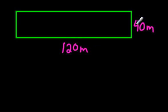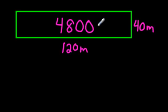So what's 120 times 40? 4,800. I just did it on my calculator. 4,800, and don't forget to write meters, and then the little square there tells us we're talking about area. So the area of this is 4,800 meters squared.